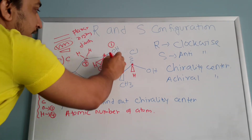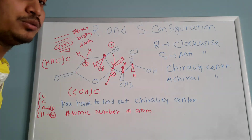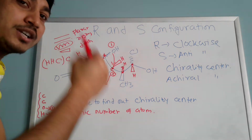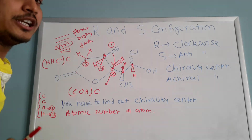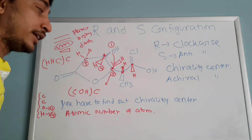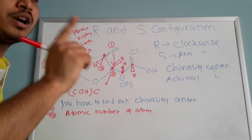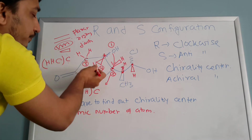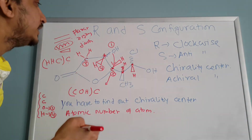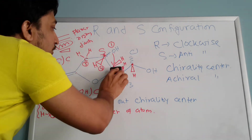So this is number three. Now look how the sequence goes — it's going clockwise. If it is going clockwise, that means the configuration is R. But your lowest atomic number (hydrogen, number four) is towards you. If the lowest atomic number is towards you, you flip it: if it looks like R it would be S, if it looks like S it would be R. So it looks like R but it is S configuration because hydrogen is pointing towards you.